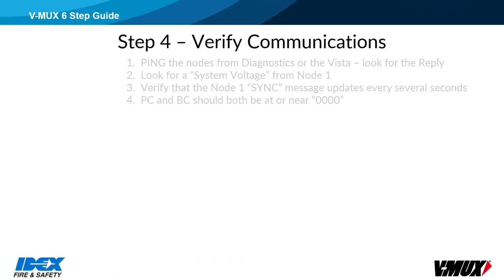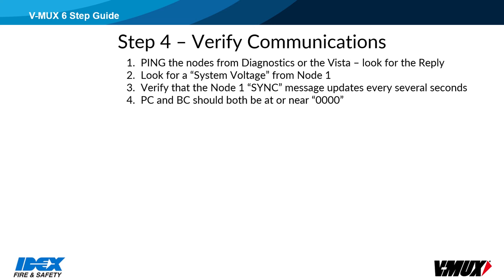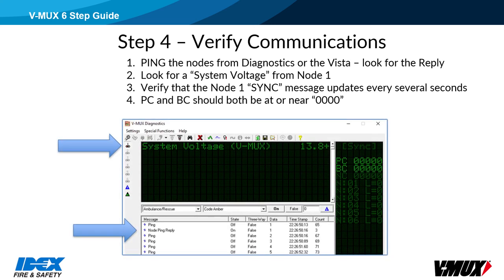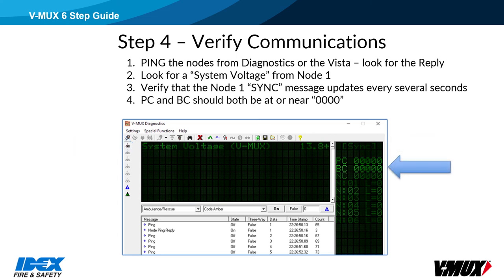Step 4: Verify communication. Ping the nodes from diagnostics or a VISTA display — ping replies should be very quick. If nodes reply slowly, then a communication problem is likely. Watch for system voltage in the sync signal, which happens every few seconds — these messages come from node number 1. When other nodes do not see the sync signal, they send a VM out of network message every few seconds. If you can see those messages, then there is network communication, just not from node 1. Check PC and BC collision counters in diagnostics — they indicate communication problems between the computer and the VMux network. These should be at or near zero.